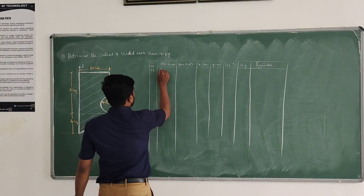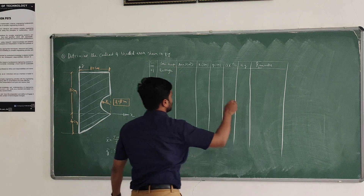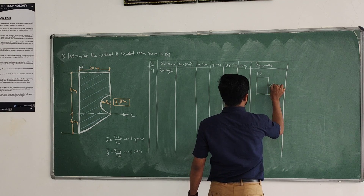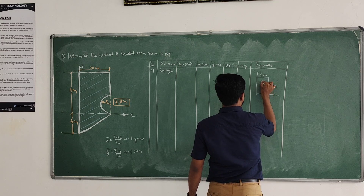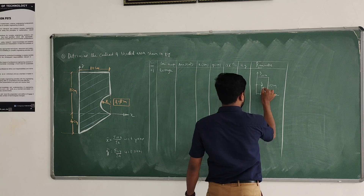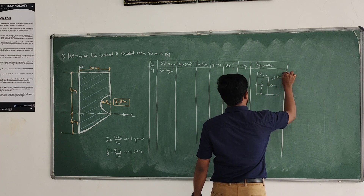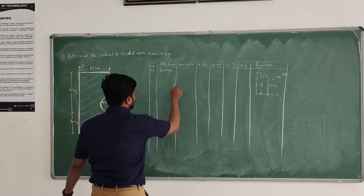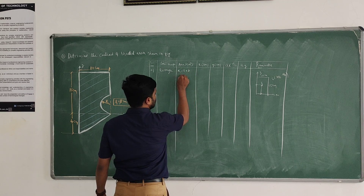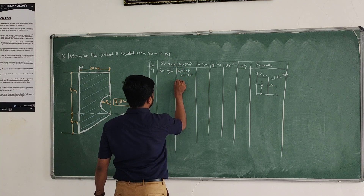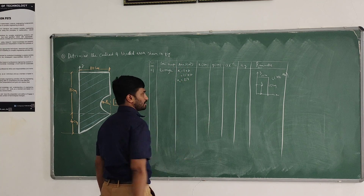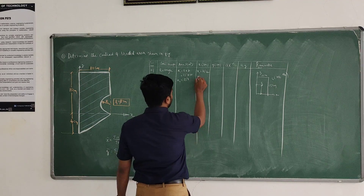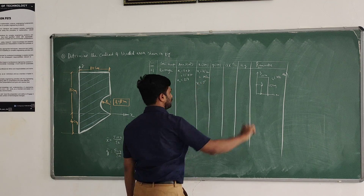The first basic shape is the rectangle. Here we have the y-axis and x-axis. The rectangle is 15 cm by 10 cm. If we identify the centroid G, it is at B/2 comma D/2, both positive because it is in the first quadrant. Area A1 = L × B = 15 × 10 = 150 cm². X1 = B/2 = 10/2 = 5 cm.